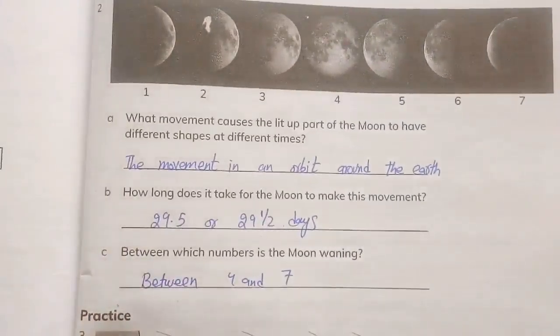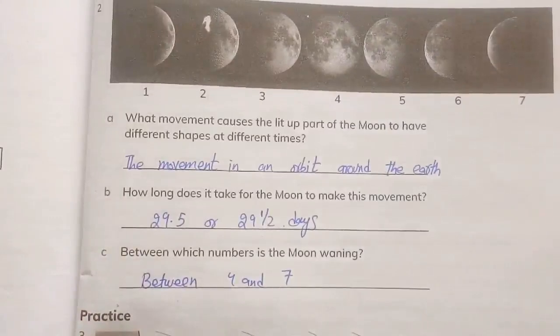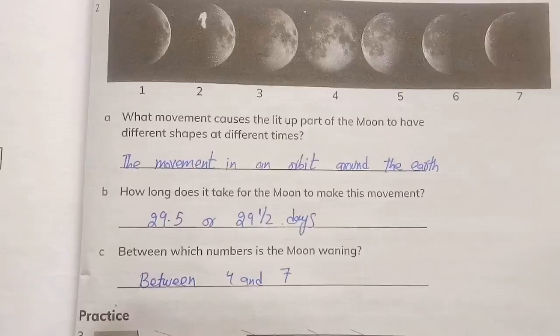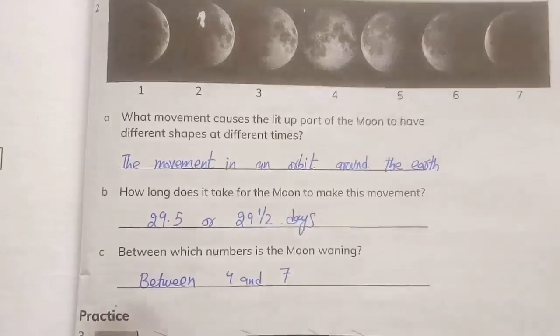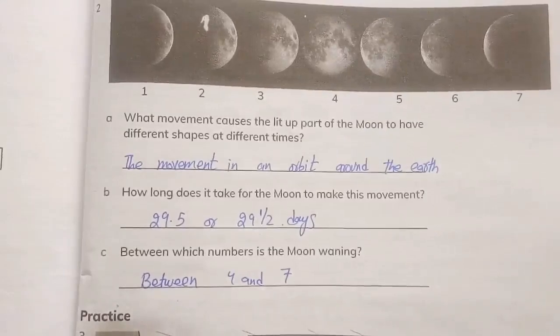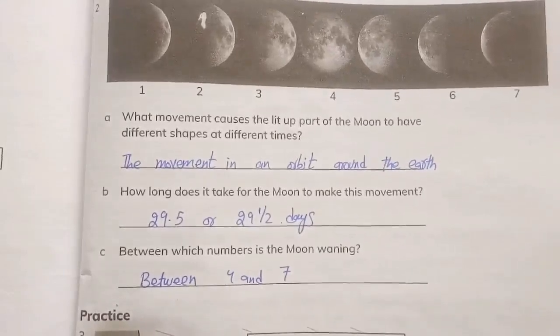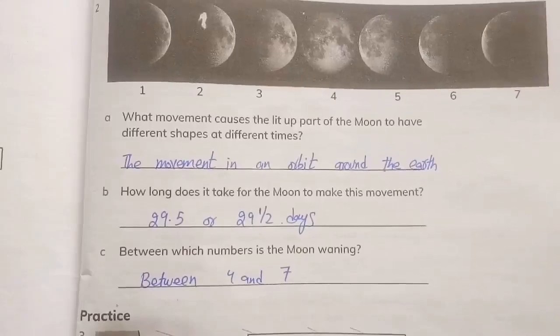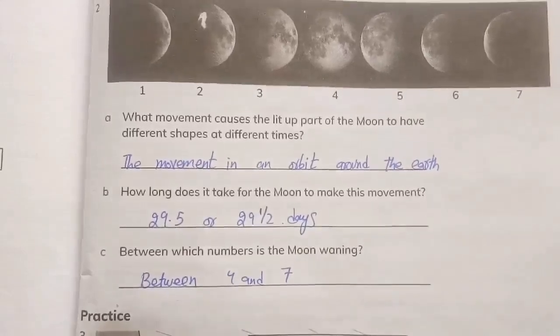Now question number 2. Part number A: What movement causes the lit up part of the moon to have different shapes at different times? The movement in an orbit around the earth. How long does it take for the moon to make this movement? 29.5 or 29 and a half days.